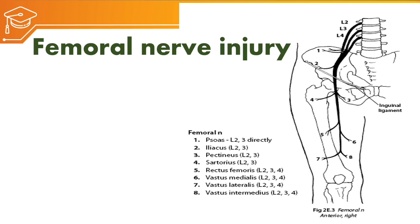After arising from L2, L3, and L4, it enters the pelvic floor anterior to the pelvic bone, near to the iliac crest. It gives a motor branch to the psoas major muscle, then below that it gives a branch to the iliacus. Then it passes anterior to the hip joint, where it gives motor branches to the pectineus and sartorius.